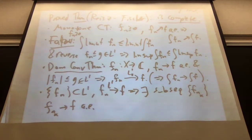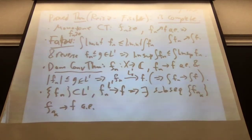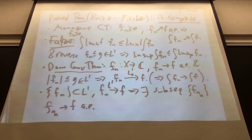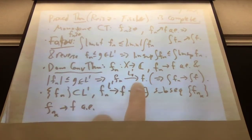Anything else before we get to new stuff? That is all the old stuff. Remember all of the counterexamples to the dominated convergence theorem. There are two ways for the mass to escape: one is for the mass to shrink but blow up, and the other is for the mass to stay bounded but run off to infinity, so that it's not bounded by any one function.